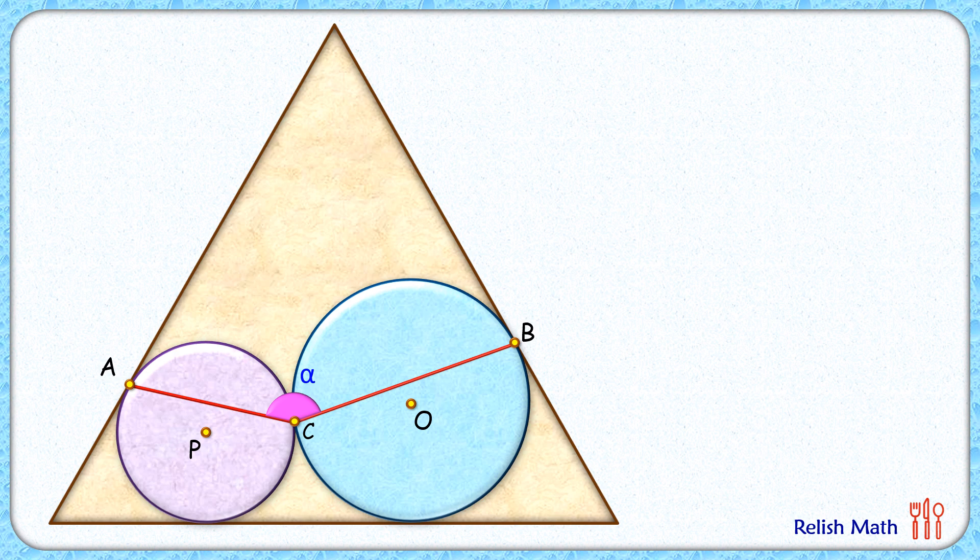Let's check this simple and elegant solution. Let's start by assuming the radius of this purple circle is r and the radius of this blue circle is R. Let's extend the radius AP and BO so that both these radii are meeting at point D here.